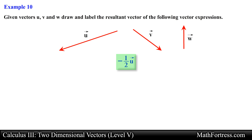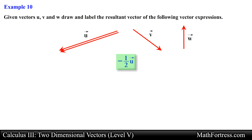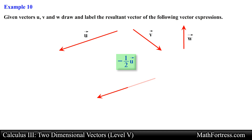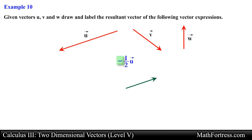Here we are once again asked to carry out a scalar multiplication. In this example we are asked to scale vector U by half its size. We also have a negative sign, so we need to change the vector's direction so that it points in the opposite direction.